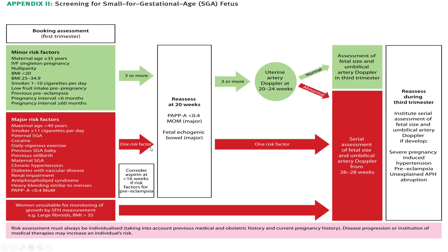Even if one major risk factor is present, consider aspirin before 16 weeks if there is also a risk factor for pre-eclampsia. At the 20-week reassessment, PAPP-A less than 0.4 multiples of the median is a major risk factor. Fetal echogenic bowel is also a major risk factor at the 20-week scan. If one risk factor is present, proceed with serial assessment of fetal size and umbilical artery Doppler from 26 to 28 weeks — this timing is very important. This appendix contains many potential exam questions as case scenarios.